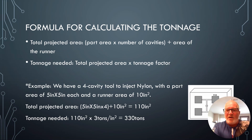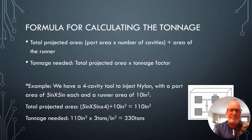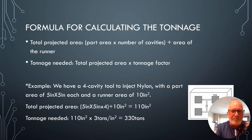The formula for calculating tonnage: Total Projected Area equals part area times number of cavities, plus the projected area of the runner. Tonnage needed equals Total Projected Area times the tonnage factor.